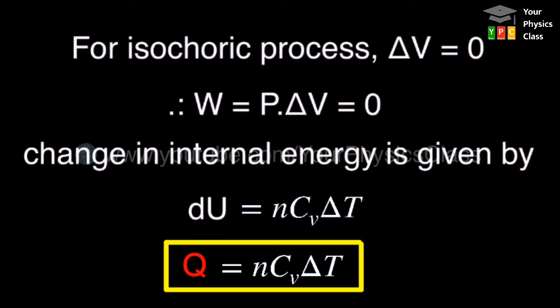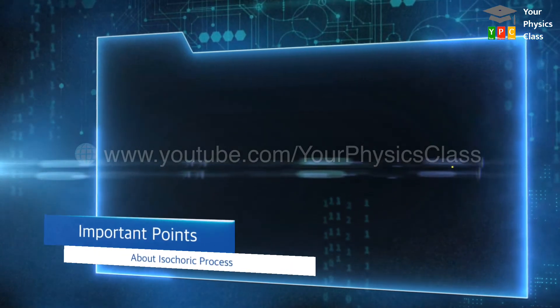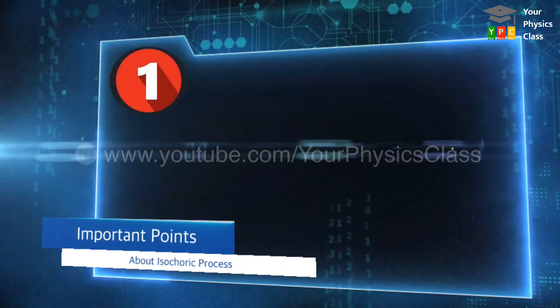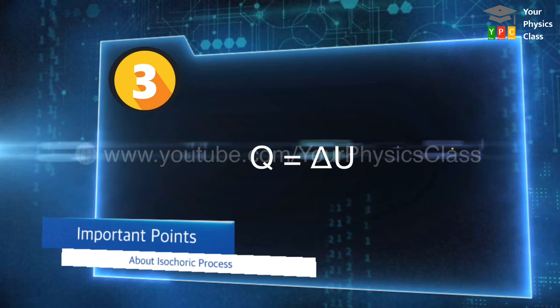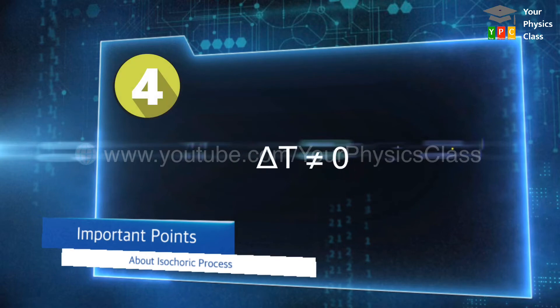This shows that whatever energy we supply to the system is used to increase its internal energy only, since it does not do work. This means at constant volume, external work done is zero, so whatever energy we supply to the system is only utilized to increase the system's internal energy. The important highlights for this system are: delta V is equal to zero because the volume is constant throughout the process; no work is done because volume remains constant; energy exchange is used to change internal energy only; and the temperature of the system changes.